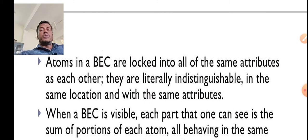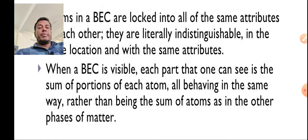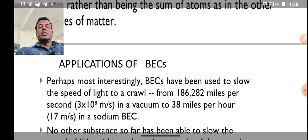In this way, BEC is locked up and atoms have literally indistinguishable same locations with the same attributes. This BEC is visible—each part of it shows the sum of portions of each atom, all behaving the same way. BEC can also be very visible compared to atoms in other phases of matter.